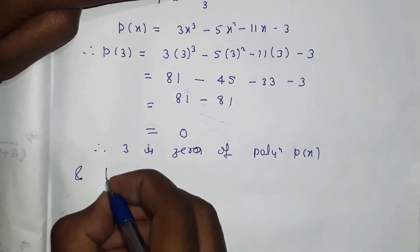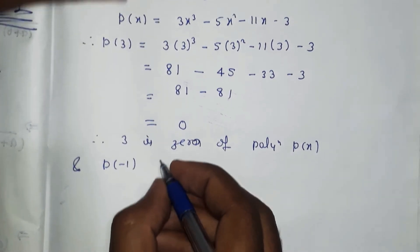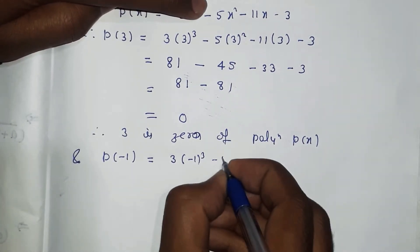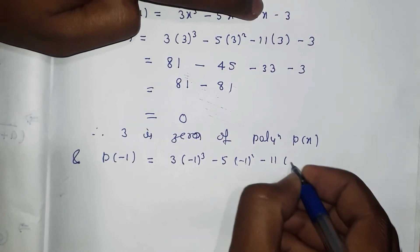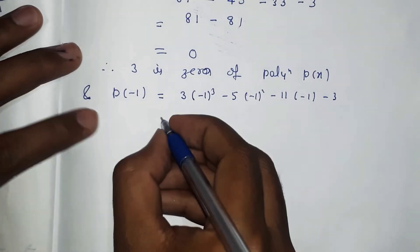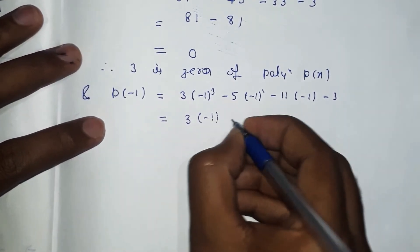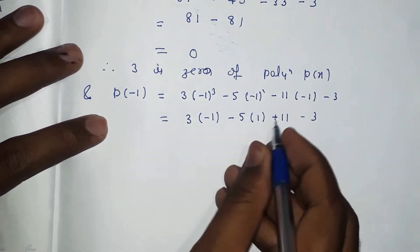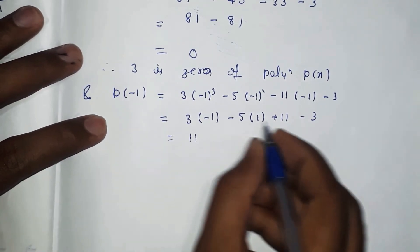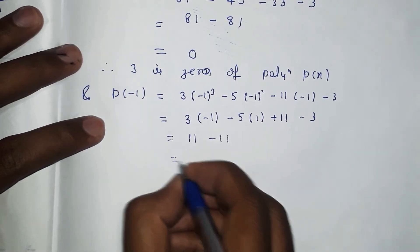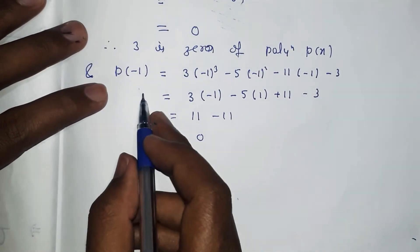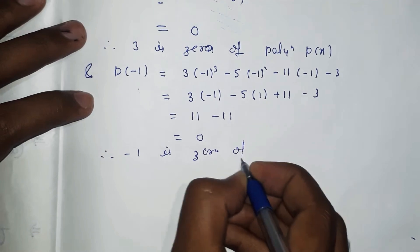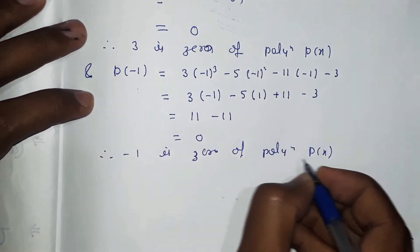Now p(-1): we check whether -1 is a zero or not. P(-1) = 3×(-1)³ - 5×(-1)² - 11×(-1) - 3 = 3×(-1) - 5×1 + 11 - 3 = -3 - 5 + 11 - 3 = 0. Therefore, -1 is a zero of polynomial P(x).